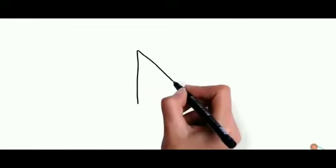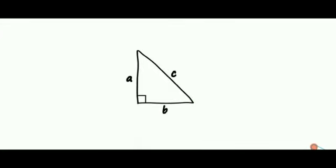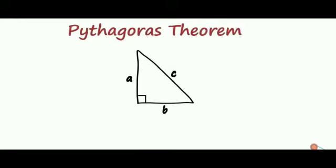We saw that if we have a right angle triangle like this with sides A, B and C, then the Pythagoras theorem says that C² = A² + B². Now let's move on to understand why.